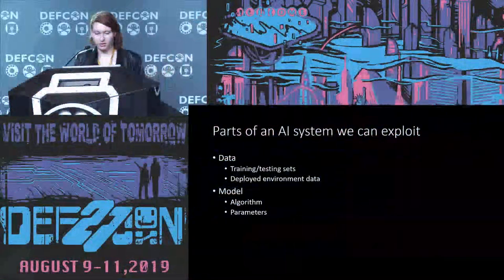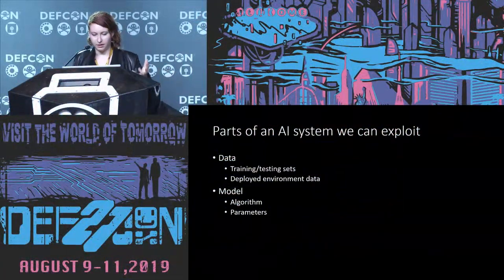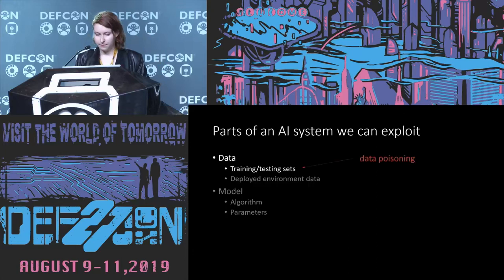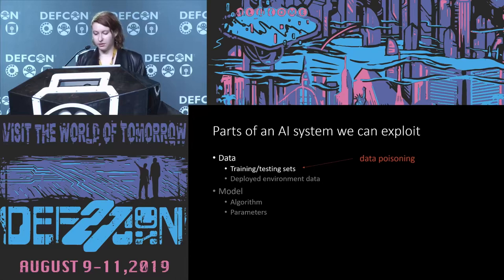Now that we have the vocabulary and basic understanding of what goes into an AI, let's look at the parts so we can think of different ways to break them. We have the data and the model. The data could be the training or testing data sets, or it could be the deployed environment data. The model is either the algorithm you use to train — like a deep neural network or logistic regression — and then the parameters are what you're tweaking that fits this algorithm to whatever data set you're working with. We can poison the data by feeding inaccurate information to the AI system, which will make it make incorrect decisions. You can actually think of this as a supply chain attack where in some cases you don't necessarily know where the data comes from.